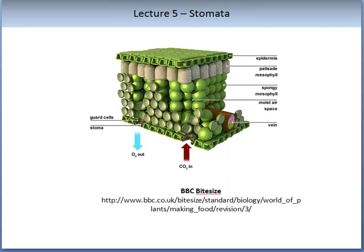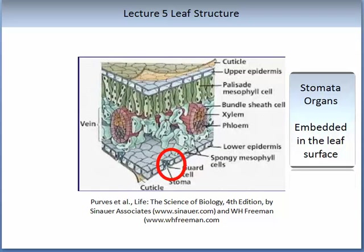This image from the BBC Bitesize website demonstrates how water leaves the leaf and carbon dioxide enters the leaf. This is the structure of the leaf. The transport vessels, also called the vein, are composed of the xylem and the phloem, which we learnt about in lecture 4. They enter into the leaf at the lower part.